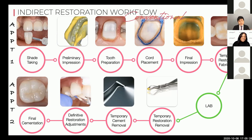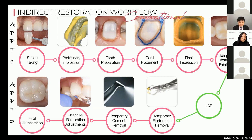After the preliminary impression, we do the tooth preparation, place our cord, and take our final impression. Using the preliminary impression, we fabricate the temporary restoration, then send everything to the lab, which takes about a week or two. On the second appointment, we numb the patient, remove the temporary restoration and cement, try in the final restoration, and do our final cementation. As you can see, there are many steps required in the conventional indirect restoration workflow.